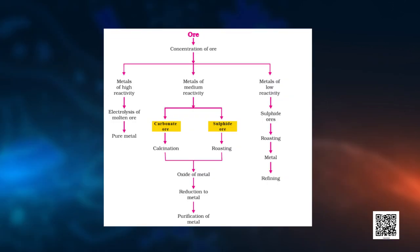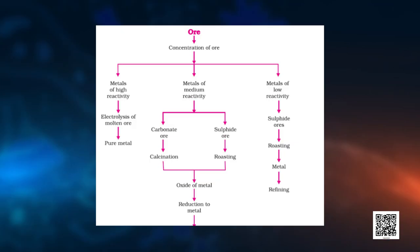Coming to extracting metals in the middle of the activity series — which metals are in the middle? They are iron, zinc, lead and copper. They are moderately reactive, so these are usually present as sulphides or carbonates in nature. It is easier to obtain metal from its oxide compared to its sulphides and carbonates. So we have to first convert them into metal oxides. The sulphide ores are converted into oxides by heating strongly in the presence of excess air, and this process is called roasting.